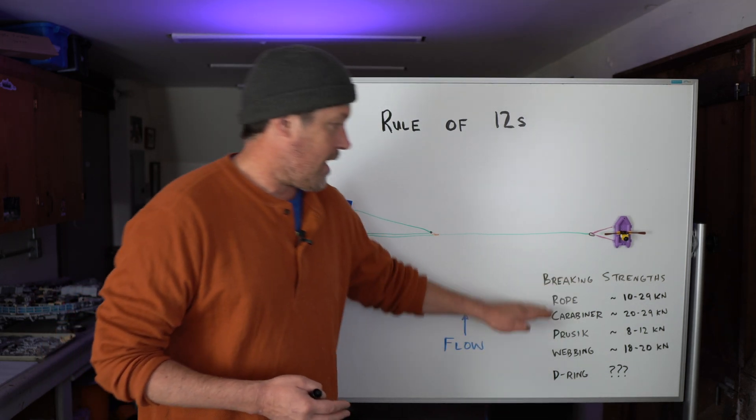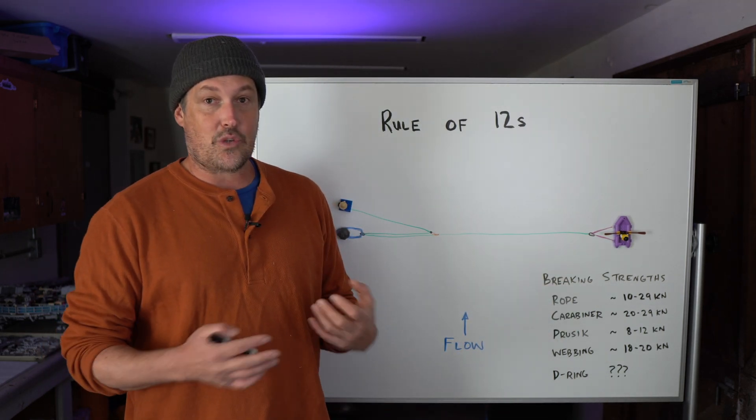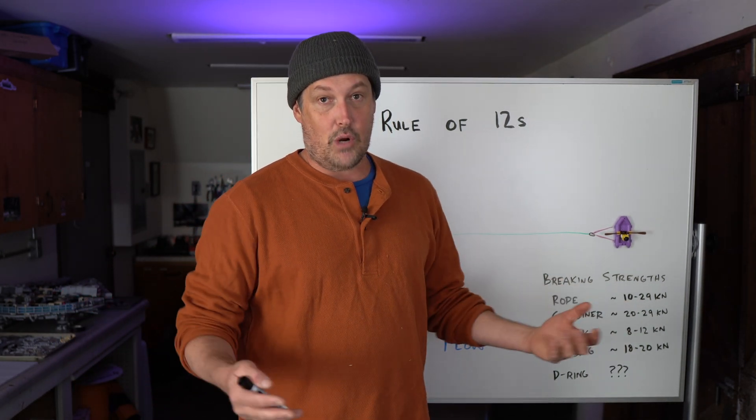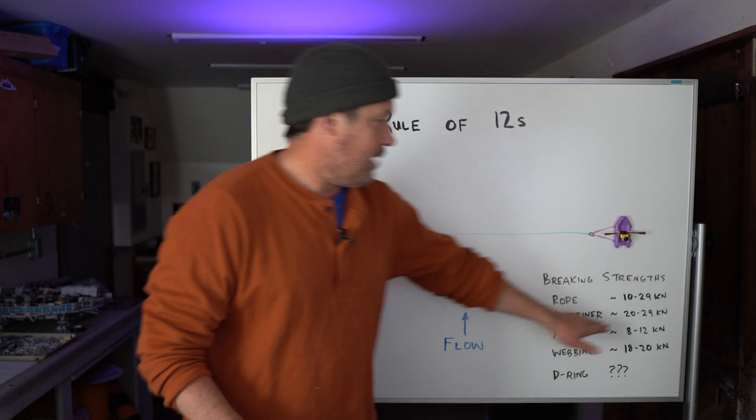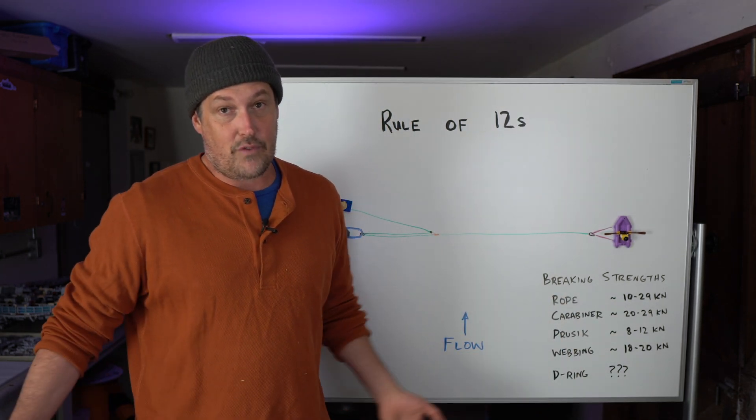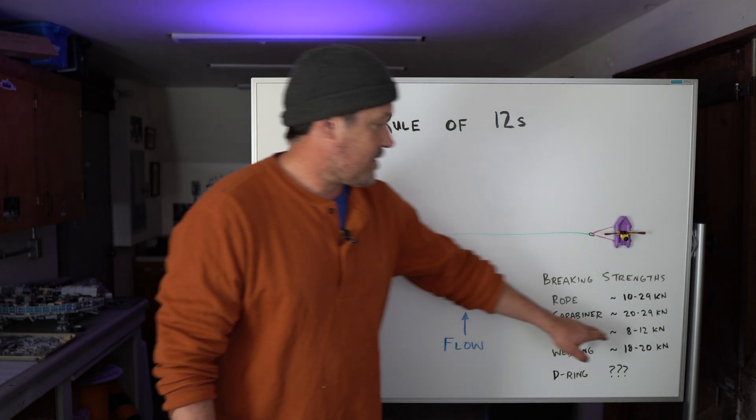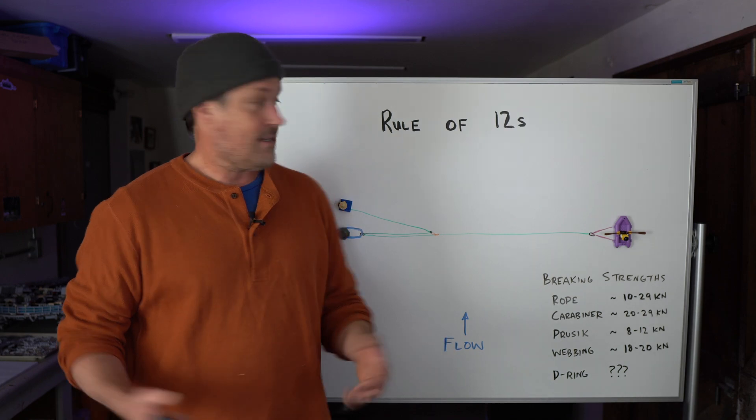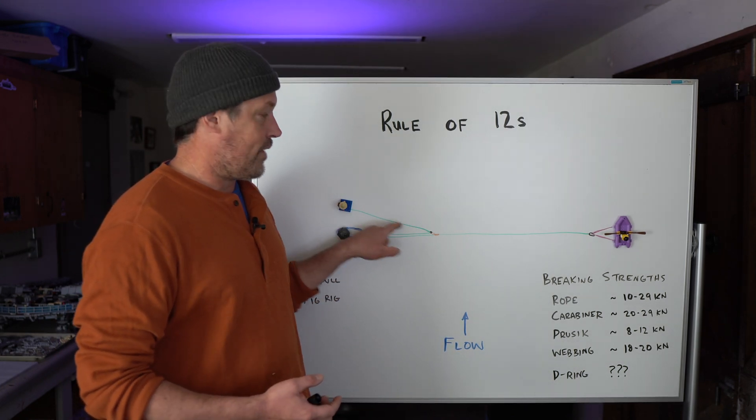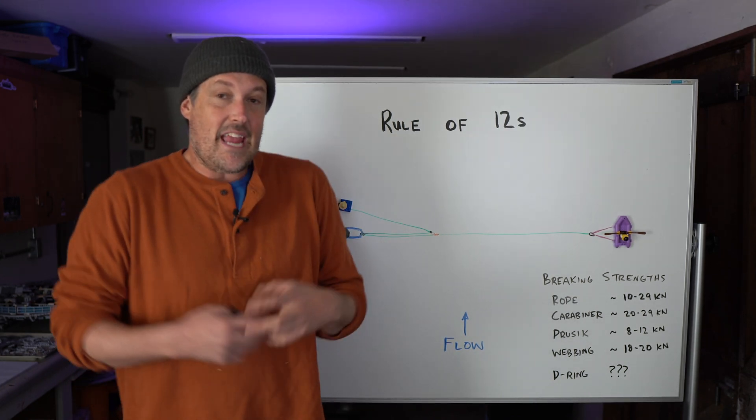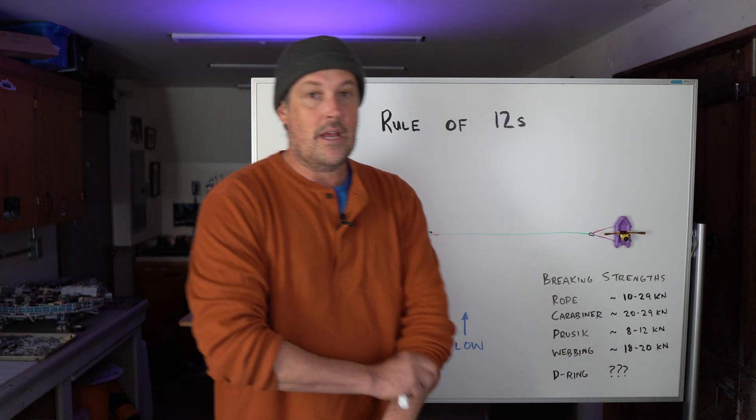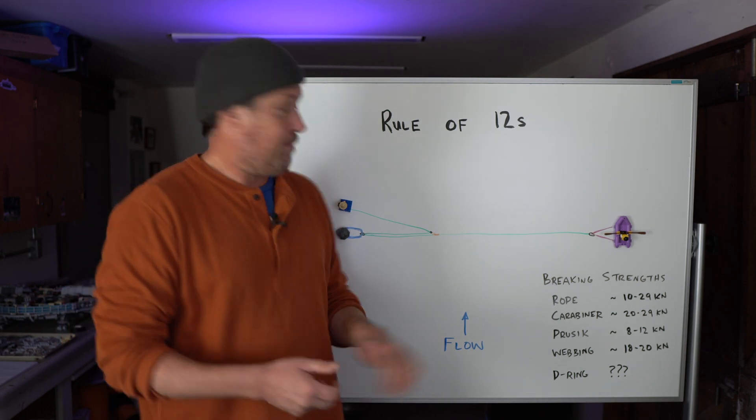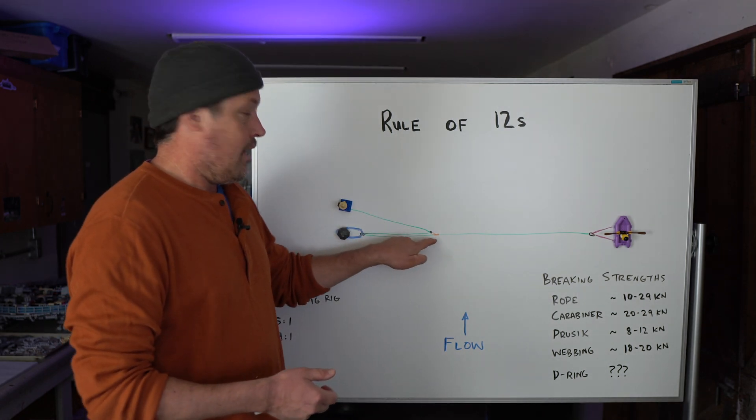And there's different things we're using here. A lot of ropes we have are 10 to 29 kilonewtons. So if we're pulling with 10 kilonewtons, we could be breaking some ropes, which is not a good thing. Carabiners are generally 20 to 29 kilonewtons. So at 12, we're getting close to that. Prussics are eight to 12 kilonewtons. So the prussic is probably what's going to break in the system because it's right here, it's getting twice the pull. So if I'm pulling with four kilonewtons, that prussic is seeing eight kilonewtons. So some prussics could break, but also the prussics will slip maybe at like five or six kilonewtons. So if you're pulling with three kilonewtons, you could see slipping.